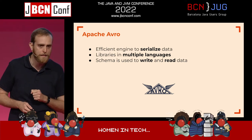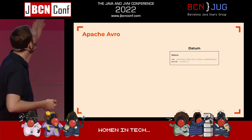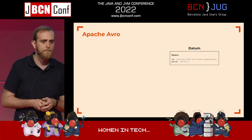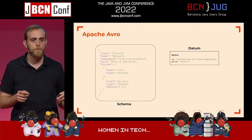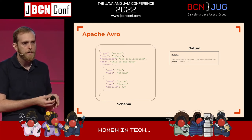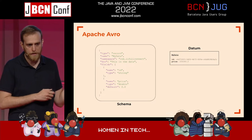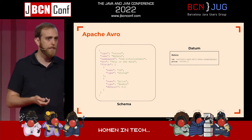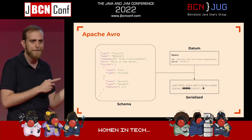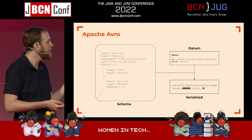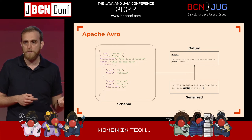In Avro, you define a schema — which is actually a JSON — and in that JSON you define what is the data structure you want to represent and serialize. What you get is a binary, which unlike JSON you cannot easily read to identify what everything is. You need the schema again to deserialize the data. So the schema is mandatory both to write and to read.